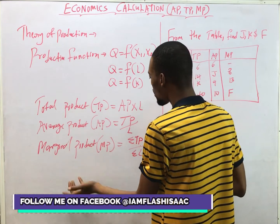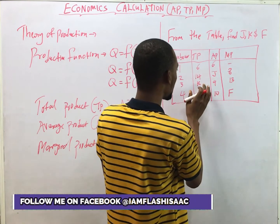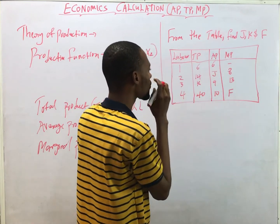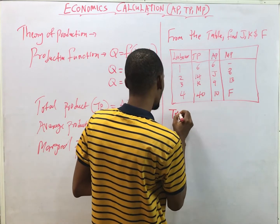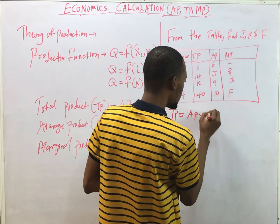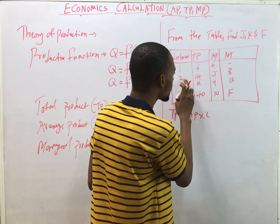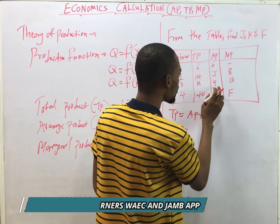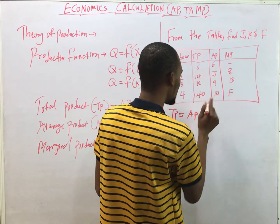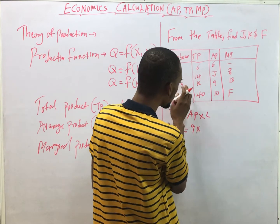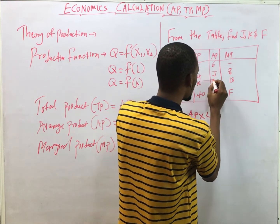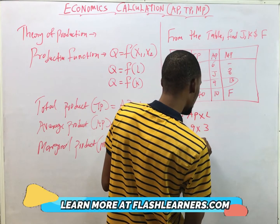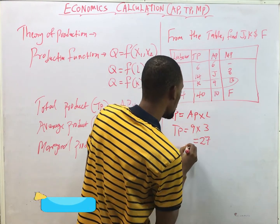We have our formulas for Total Product, Average Product, and Marginal Product. To solve for k, we apply the formula. Total Product (TP) equals Average Product (AP) times Labor (L). The average product corresponding to this row is 9, and the corresponding labor is 3, so Total Product is simply 9 times 3, which equals 27. Therefore k equals 27.